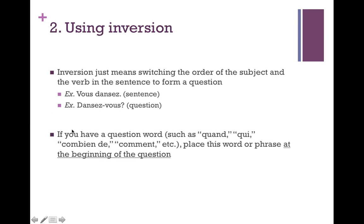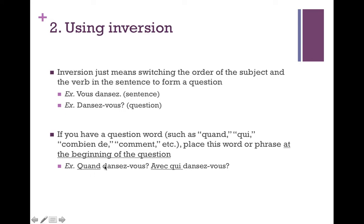With inversion, if you have a question word, you place it again at the beginning of the question — just like with est-ce que, where you put question words at the beginning. So this would be 'quand dansez-vous?' — when do you dance? — and 'avec qui dansez-vous?' — with whom do you dance?